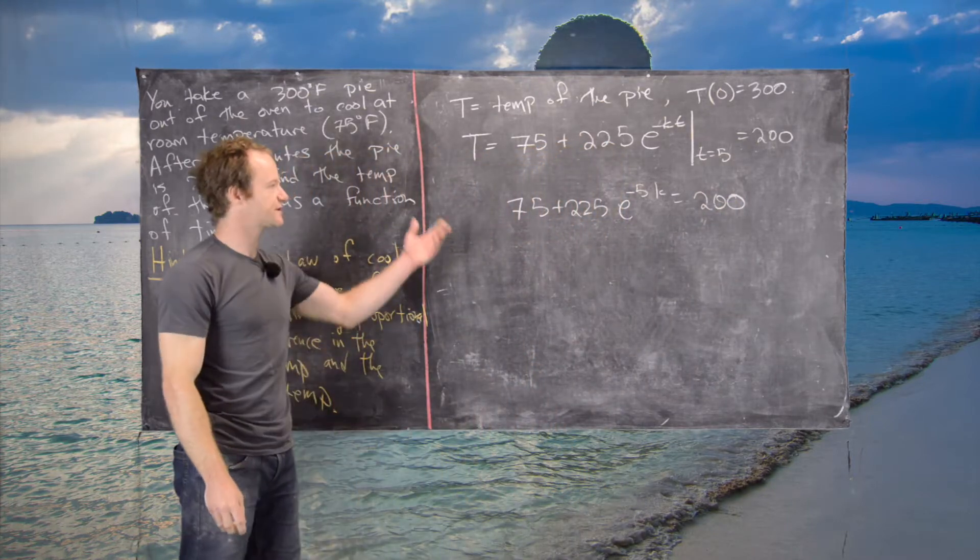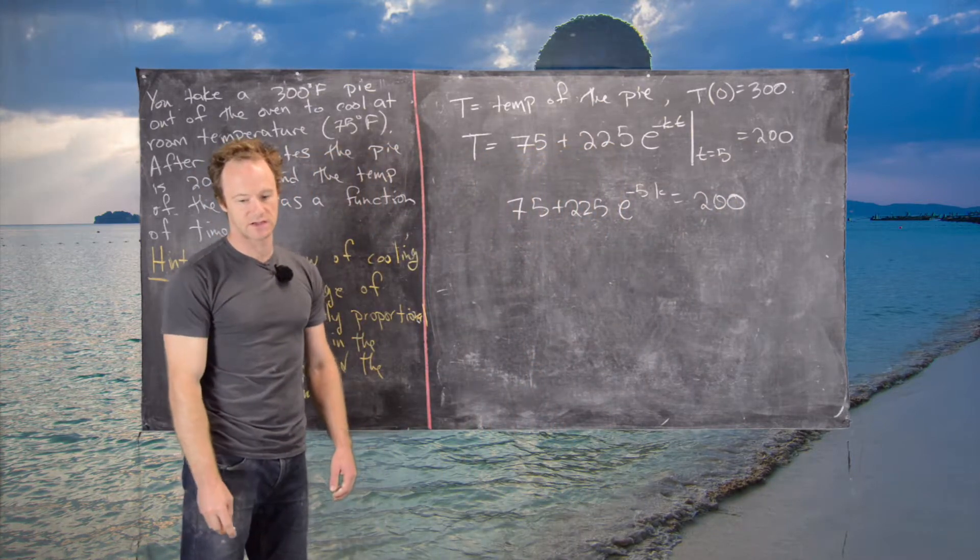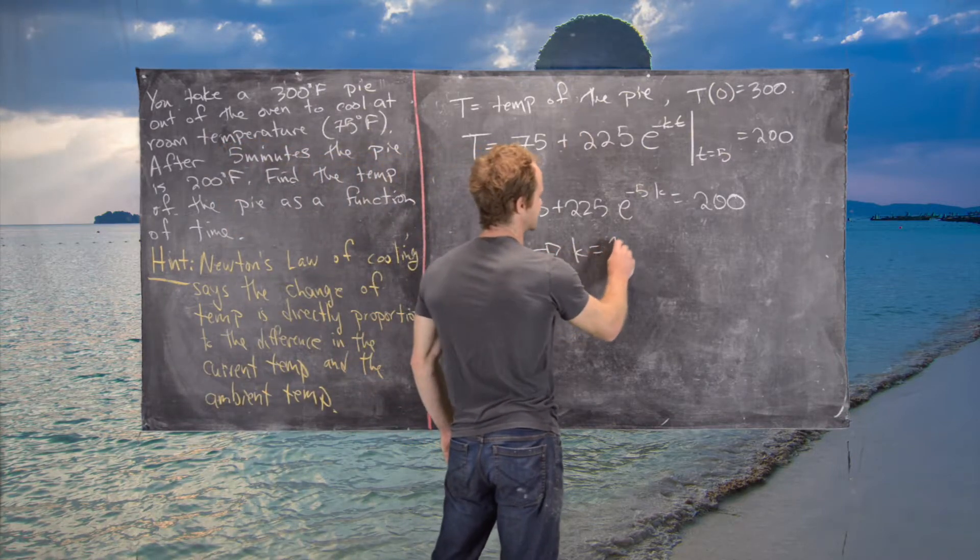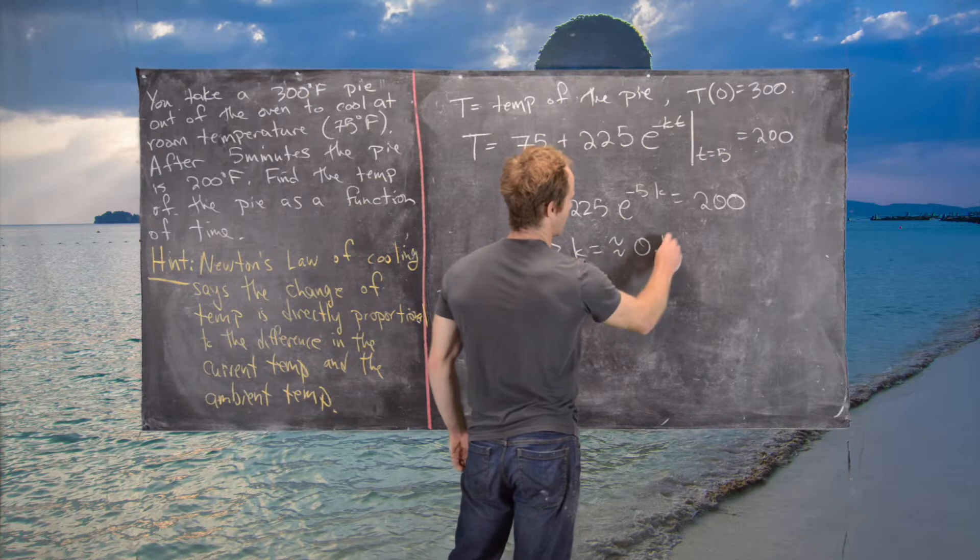We have 75 + 225e^(-5K) = 200. I'll leave the details to you, but this implies that K ≈ 0.12.